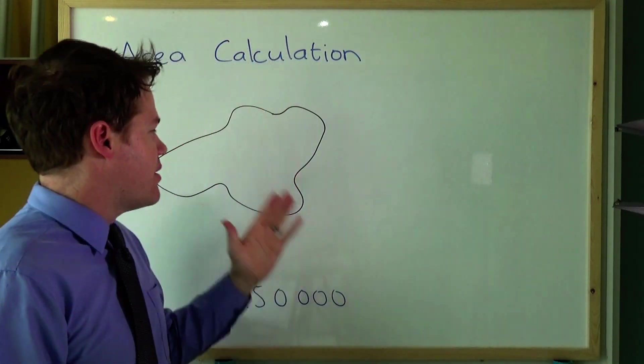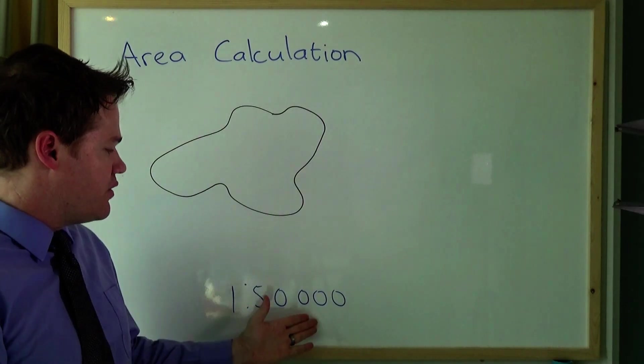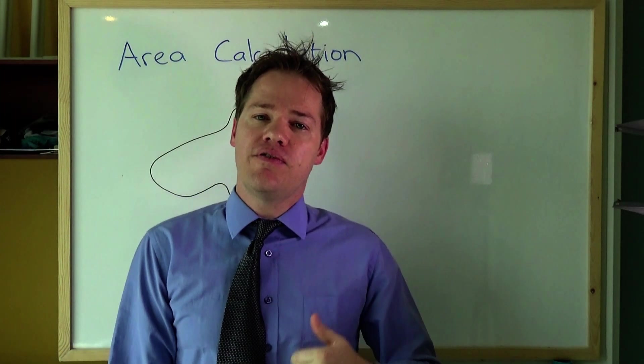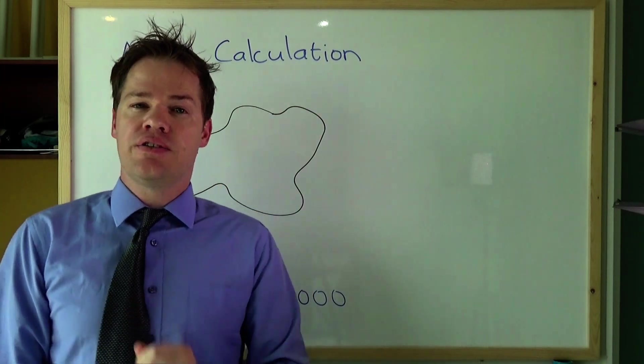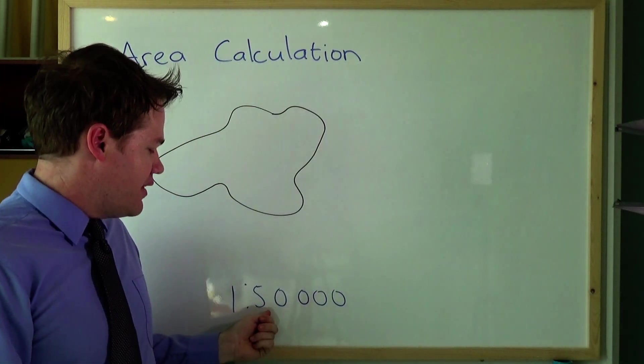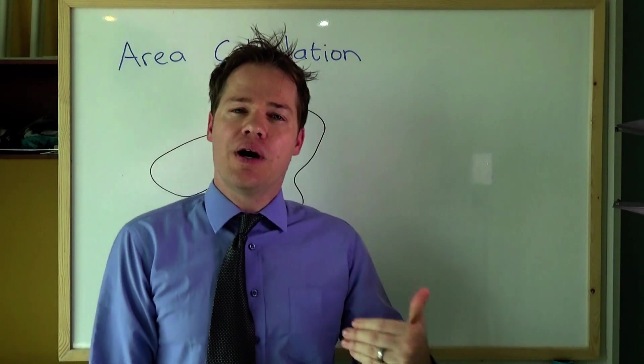If we know that this is a map and the scale is 1 to 50,000 we already know that 50,000 centimeters is 500 meters. So we need to double this amount here in order to get to one kilometer.